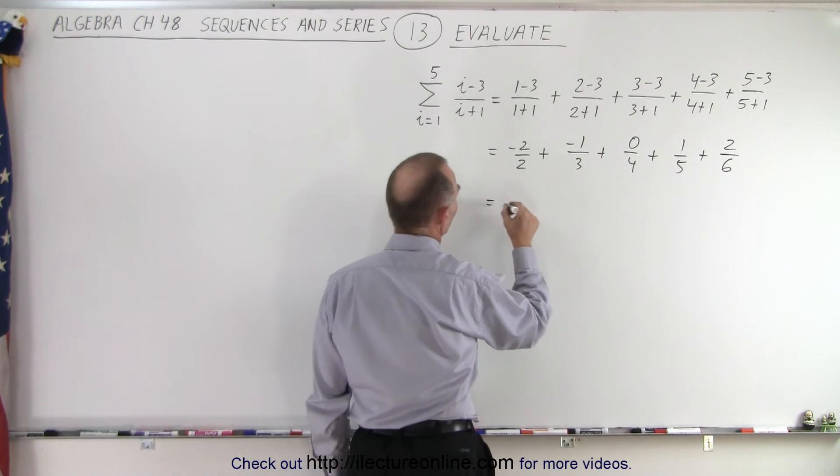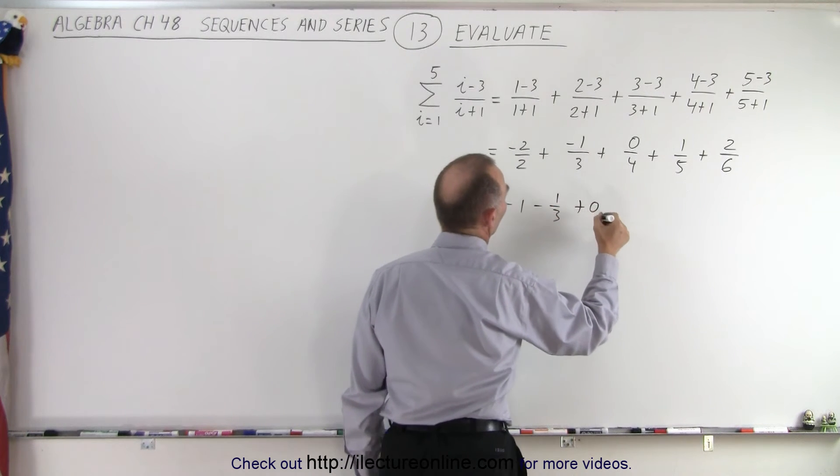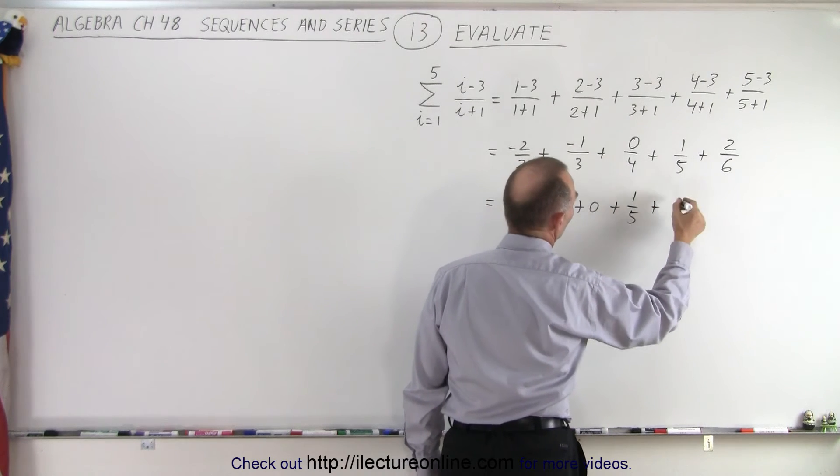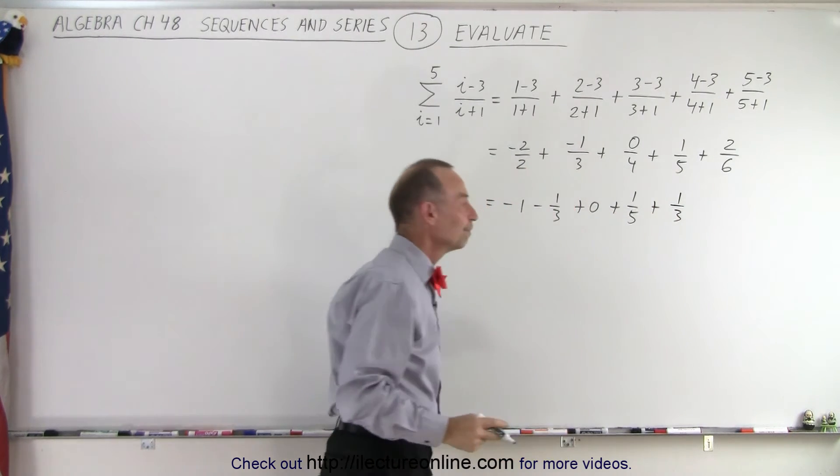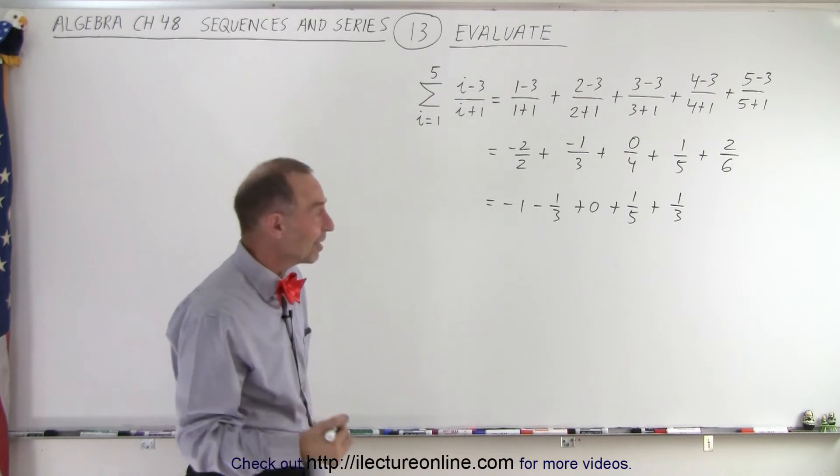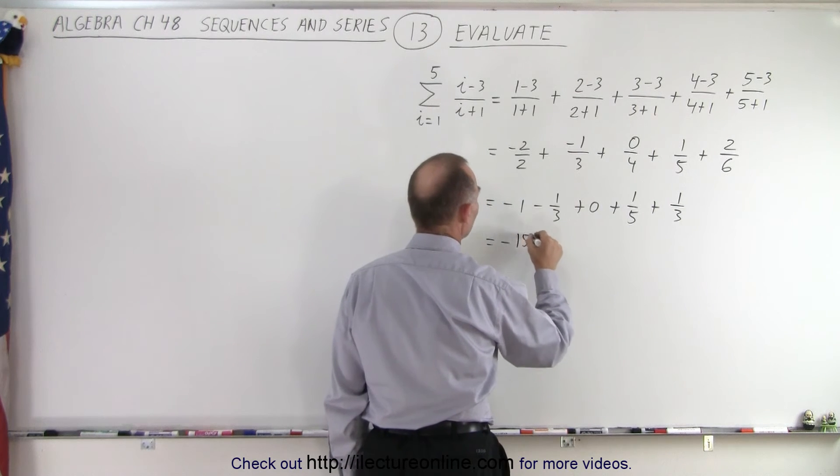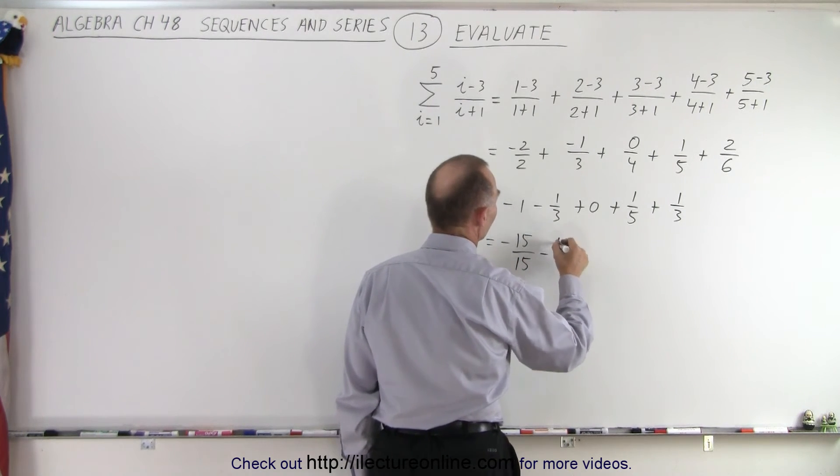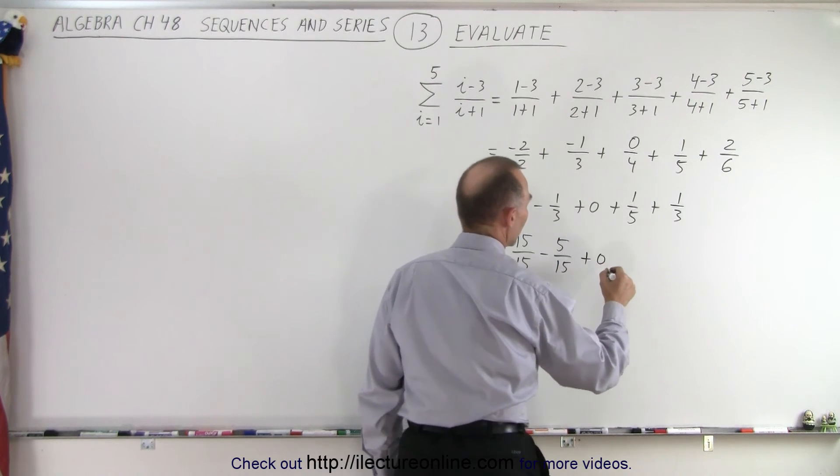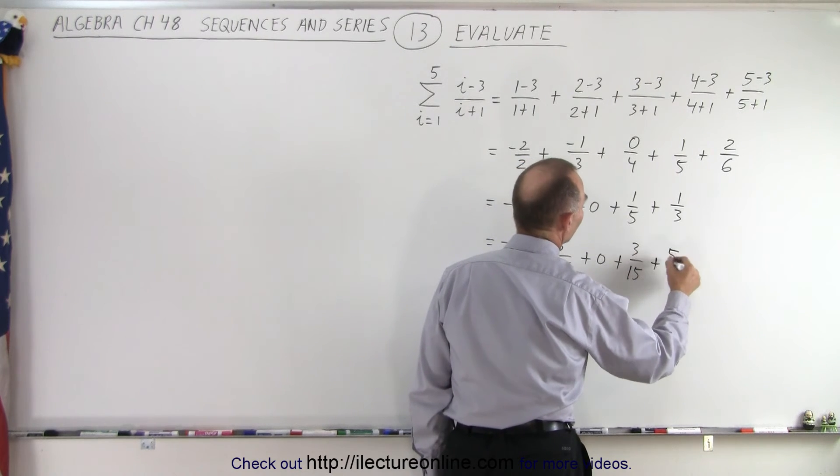Simplifying this, so this becomes minus one minus a third plus zero plus a fifth and plus two six, which becomes one third. Now, of course, we need to sum all that up. We have some fractions. The common denominator is 15, three times five. So this becomes minus 15 over 15 minus five over 15 plus zero plus three over 15 and plus five over 15.